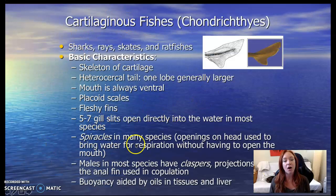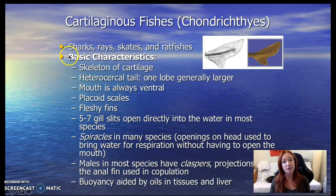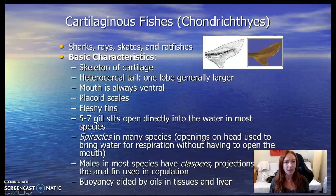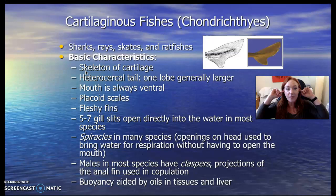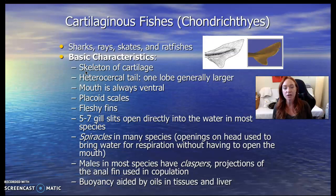First, cartilaginous fishes. This is a big group, a very old group of fish that's been around many of them pretty unchanged for a few hundred million years. These are sharks, rays, skates, and ratfishes. Their skeleton is made of cartilage — if you don't know what that is, go ahead and grab your ears and flap them. Your ears are made of cartilage. So these fish, their whole skeleton is made from the same squishy material in your ear and at the end of your nose, except for their jaws and their teeth.